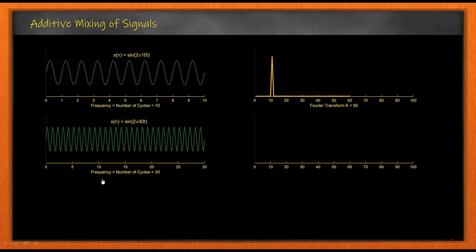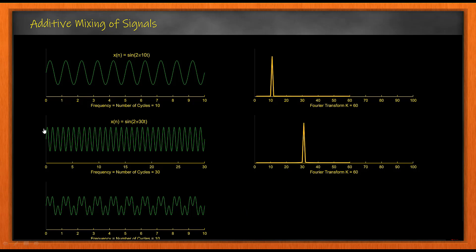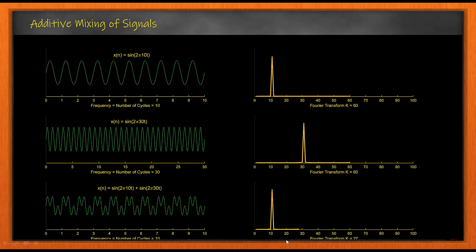This signal is sine(2π·10t) and the frequency is 10, so I get a peak at 10. For the next signal, sine(2π·30t), the frequency is 30, so I get a peak at 30. This was discussed in the previous lecture. In today's lecture I'm adding these two signals together, getting a third signal whose Fourier transform consists of two peaks at 10 and at 30 — it's just like adding the two Fourier transforms together.